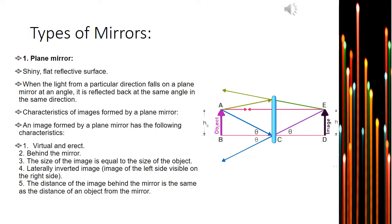Talking about the characteristics of images formed by a plain mirror, the image formed is always virtual and erect. A plain mirror forms a virtual image because the reflection does not fall on a surface; rather, we see a reflection that appears to be behind the mirror. The image reflected through a plain mirror is of the same size as that of the object.